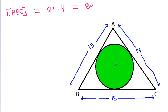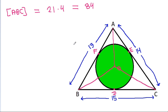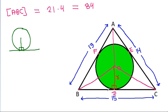Now, suppose the center of the circle is O, and if we join AO, BO, and CO, and suppose the foot points are D, E, and F respectively. Then in any circle, the radius and tangent are perpendicular to each other. Here OD is a radius, so it is perpendicular to BC. And OE is a radius, so it is perpendicular to AC.